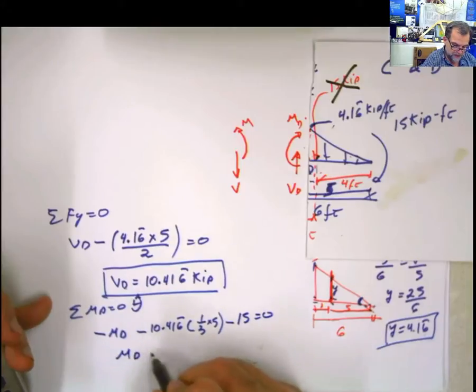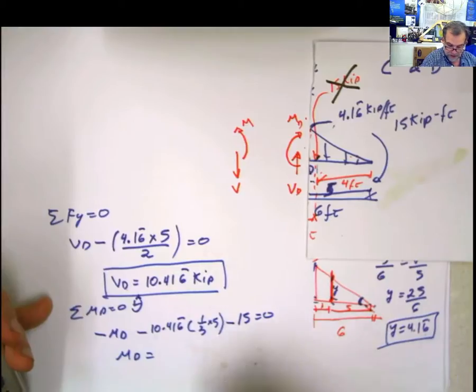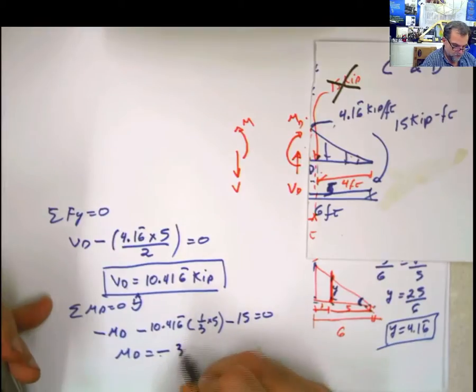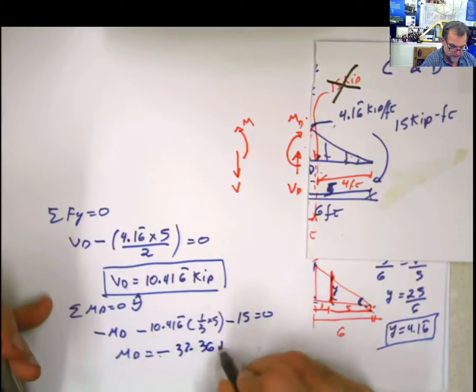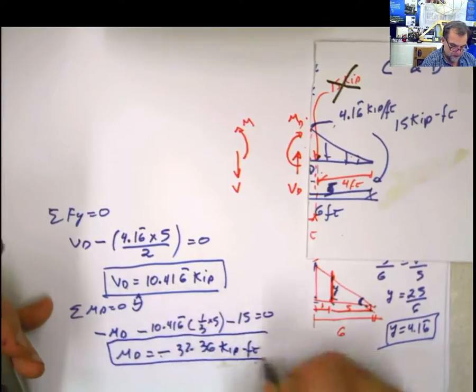So my moment at D is going to be, if I pass this to the other side, it's going to be negative. And this is this value multiplied by 5 divided by 3 minus 15. Plus 15 because that value. That's going to be equal to 32.36 kip feet. And that will be the moment.